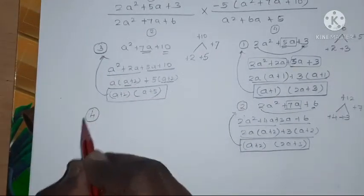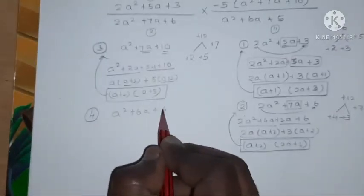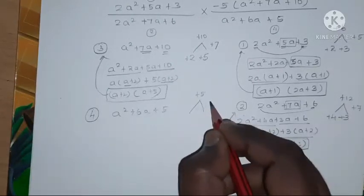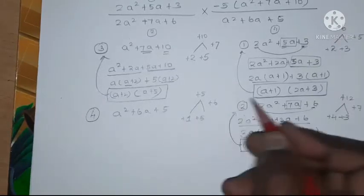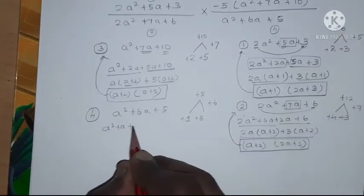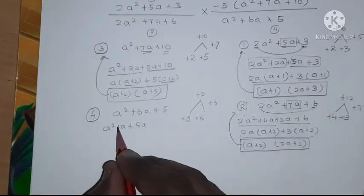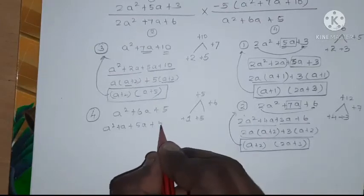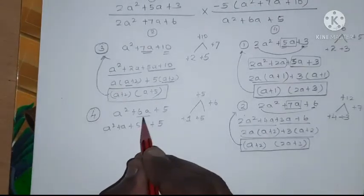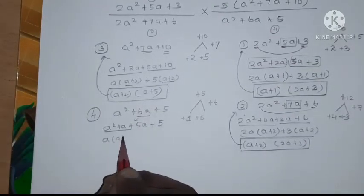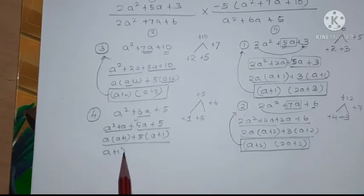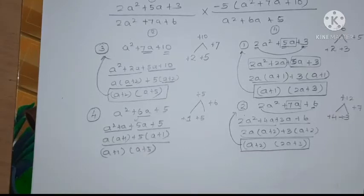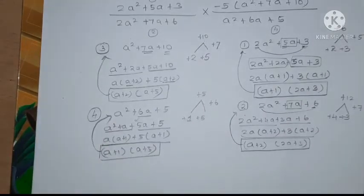Next, polynomial 4: a squared plus 6a plus 5. Two numbers that multiply to plus 5 and add to plus 6 are 1 and 5. So 6a splits into a plus 5a: a squared plus a plus 5a plus 5. Taking a common gives a(a+1), and taking 5 common gives 5(a+1). So a plus 1 is common, giving factors (a+1)(a+5).